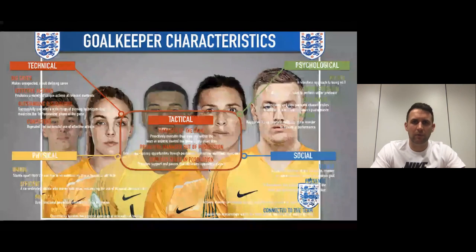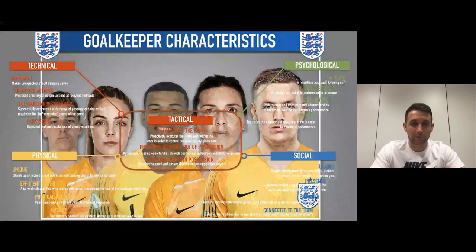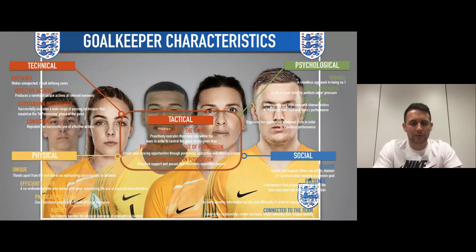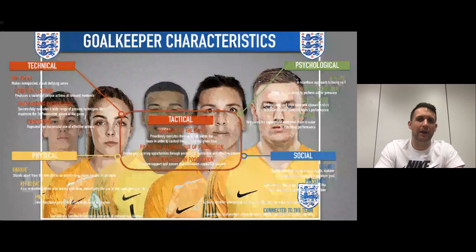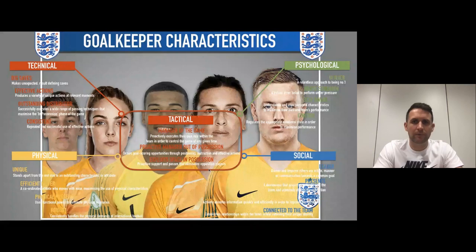We went through a lengthy process of putting together a player profile — these are our goalkeeper characteristics, the things we look for from all our goalkeepers at all ages. This took us about nine months. We started with a small group, then expanded to other sports, different organizations, ex-players, current players, and managers. These characteristics are aspirational — you can display them at any age, from as young as you want to go.